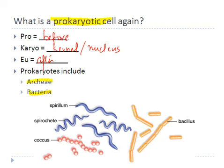Bacteria are very small. Their average size is about 2 to 6 microns — not millimeters, but 2 to 6 microns. These bacteria are so small that you really cannot see them with a light microscope; you need oil immersion microscopes to see them.